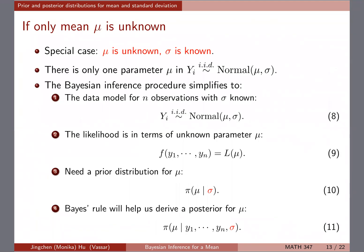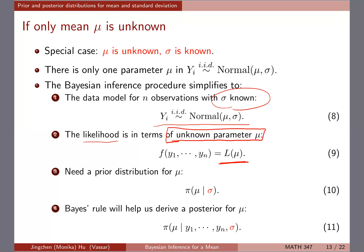Let's start with assuming only the mean is unknown and sigma is known. With one parameter known, it becomes a one-parameter model. Because sigma is now known, the likelihood can be written in terms of the only unknown parameter mu. We get rid of sigma since it's known and express everything in terms of mu. To do Bayesian inference we need a prior for mu.